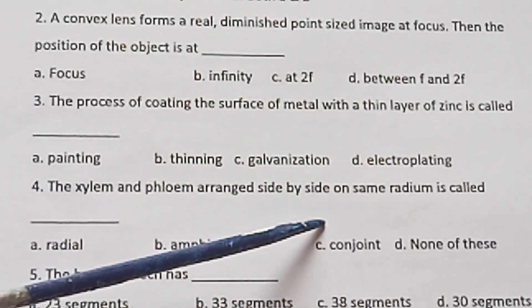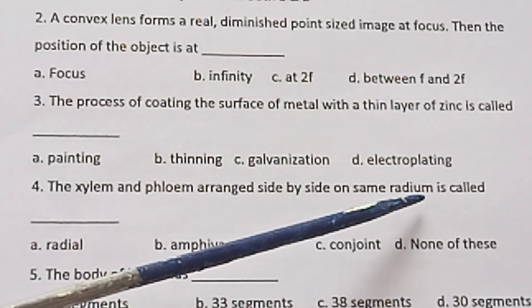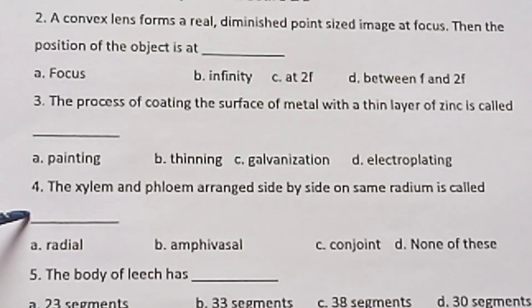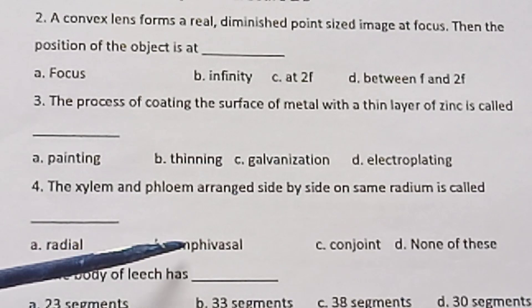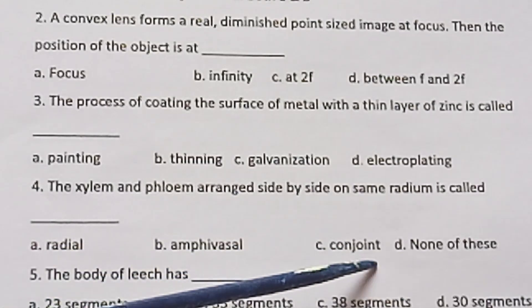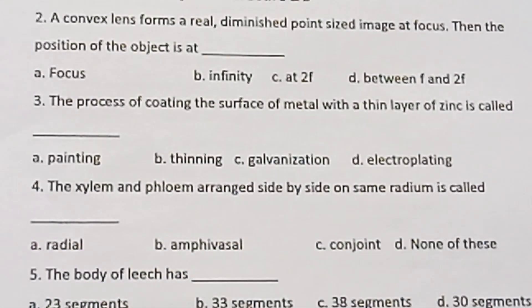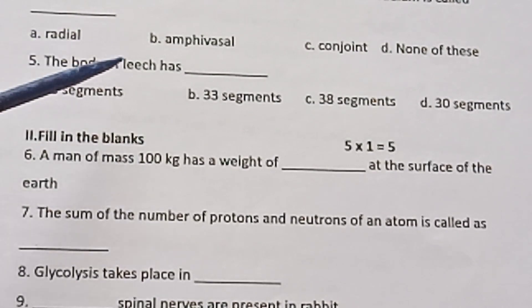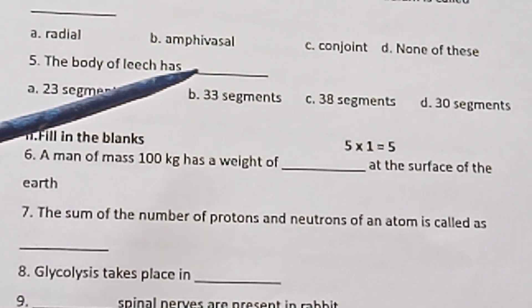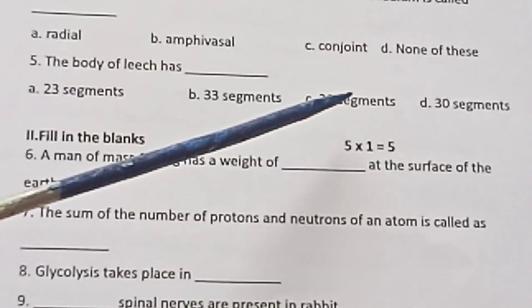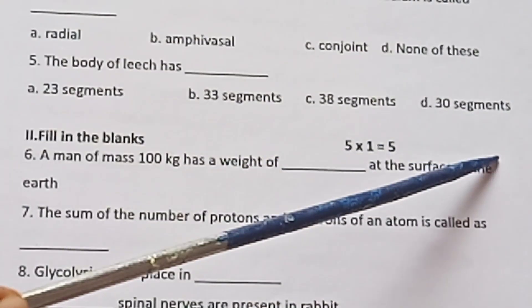Fourth one. The xylem and phloem arranged side by side on same radius is called dash. Radial, Amphivasal, Conjoint, None of these. Fifth one. The body of leech has dash. 23 segments, 33 segments, 38 segments, 30 segments.